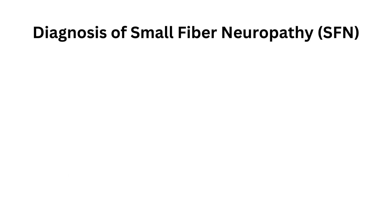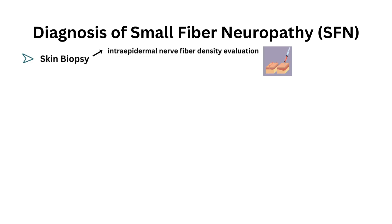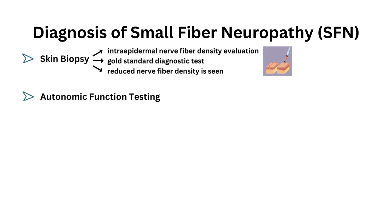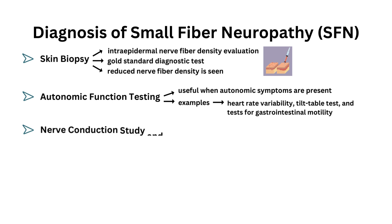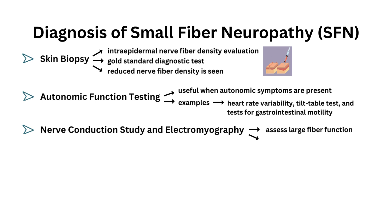Diagnosis of SFN is done using Skin Biopsy with Intraepidermal Nerve Fiber Density Evaluation, which is the gold standard diagnostic test. Reduced nerve fiber density is seen. Autonomic function testing is useful when autonomic symptoms are present, with examples including heart rate variability, tilt-table tests, and tests for gastrointestinal motility. Nerve conduction study and electromyography is used to assess large fiber function, typically normal in SFN, but used to rule out other types of neuropathy.